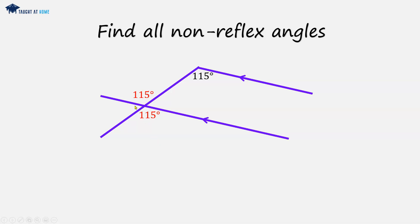And now we just have to get the two angles here. So because this angle 115 degrees is on a straight line with this angle, these two angles together will be 180 degrees.